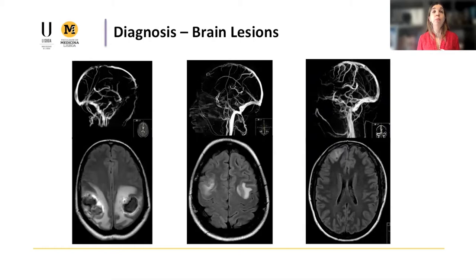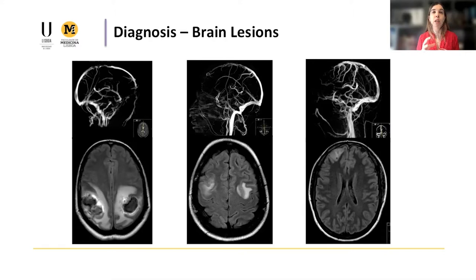Parenchymal changes associated with CVT share some characteristic patterns. For example, a lesion that crosses the usual arterial boundaries, often with a hemorrhagic component, particularly if close to a sinus — here we see lesions close to the superior sagittal sinus. However, it is quite variable. These three patients have the same pattern of thrombosis — a segment of the superior sagittal sinus and some cortical veins — but the lesions are very different in size, severity, and components. So indeed, it is quite unpredictable.